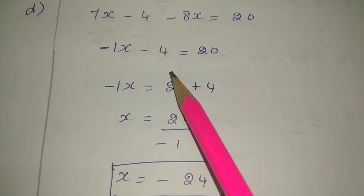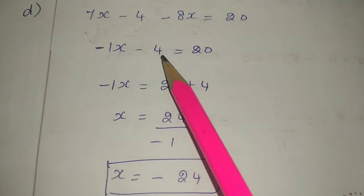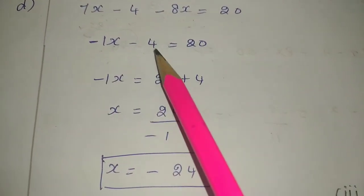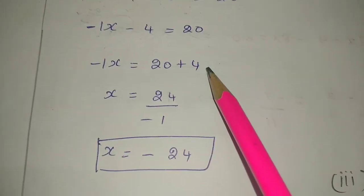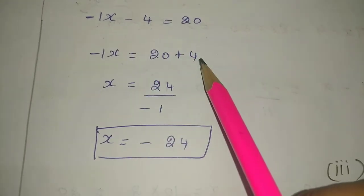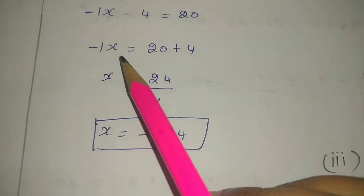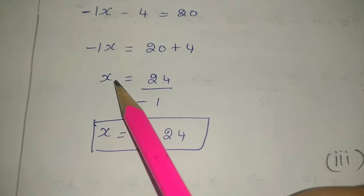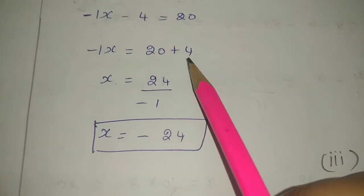The constant term transposes first. So minus 1x equals 20. Minus 4 becomes plus 4. Now, what do we do? x equals 20 plus 4, which is 24.